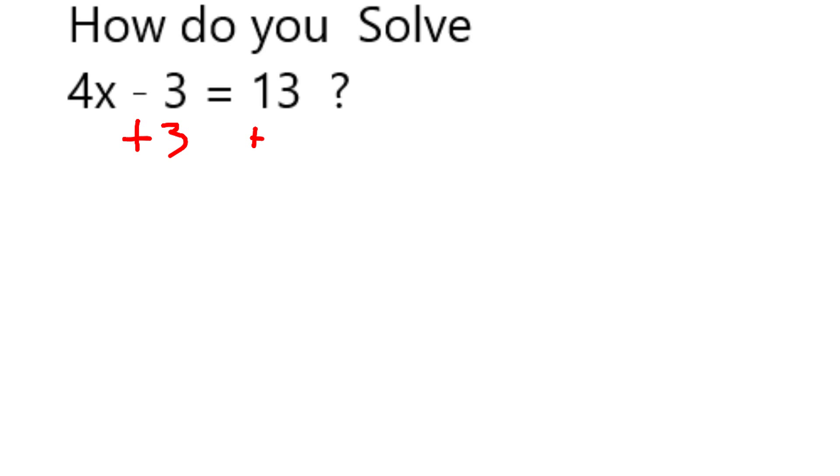So what I do is to get x by itself, I'm going to undo what's been done to it first by adding three on each side. Adding three on each side cancels out that, leaves me with a simpler equivalent equation.